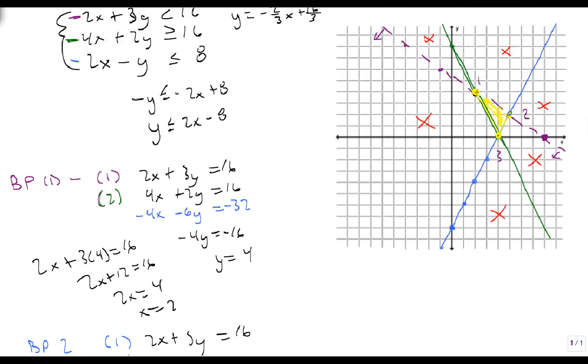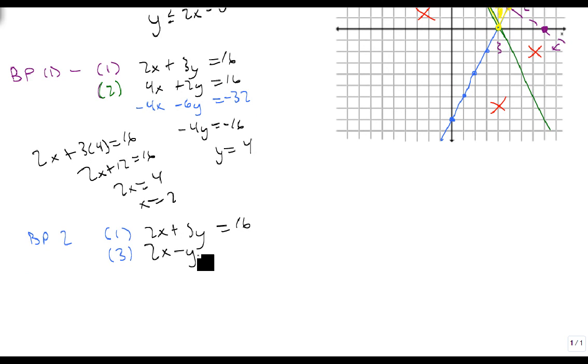And 2x minus y equals 8. Again, I'm going to use elimination. Let me make that 3 look just a little bit better. So we're going to do minus 2x minus 3y equals minus 16. That gives me minus 4y equals minus 8. So y is 2.